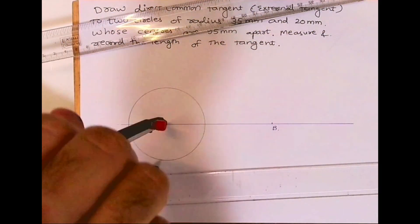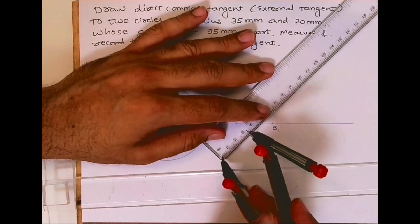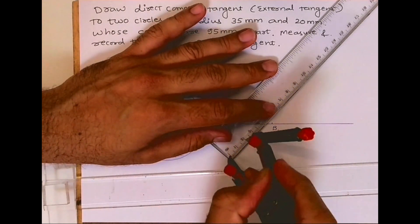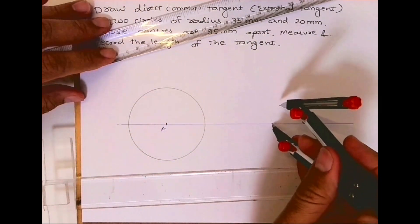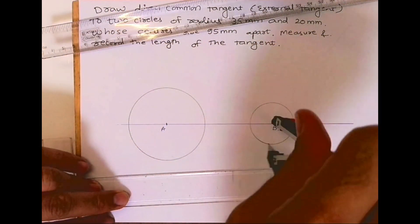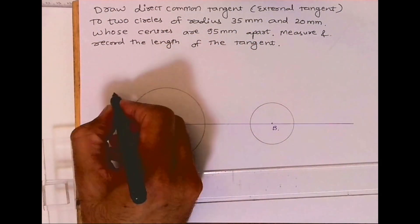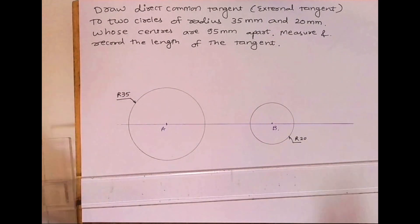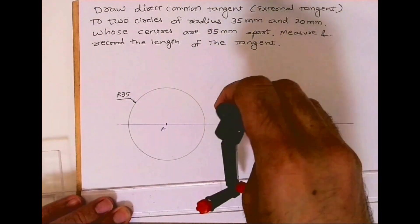We'll draw radius 35, and from B we'll take radius 20. See, this is 35, this is radius 20, and the distance between A to B is 95. Now you need to bisect that distance.